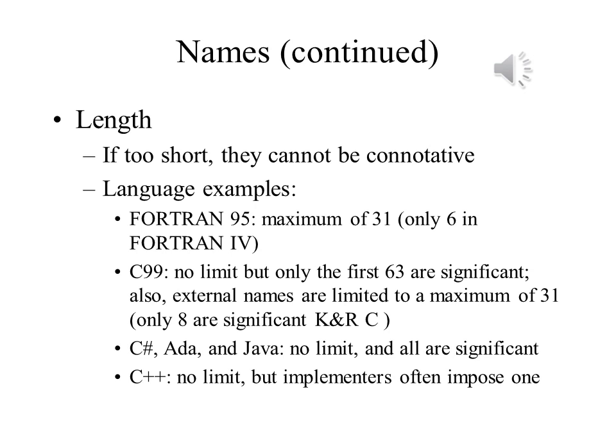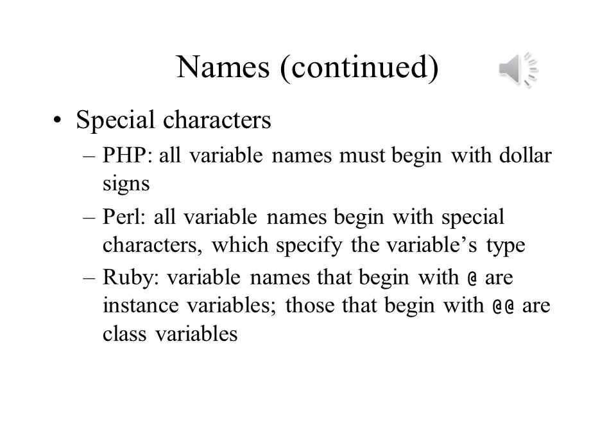C++ has no limit, but the standard allows implementers to impose one. C#, Ada, and Java have no restrictions — there is no limit in how long an identifier can be, and all characters in an identifier are significant. Some languages use special characters, usually non-alphanumeric characters, in identifiers, and they can be used for a variety of reasons. BASIC uses a percent sign at the end of an identifier to indicate that it is an integer variable, and a dollar sign to indicate a character string. Perl uses special characters to distinguish between different types of variables. Scalar single-valued variables begin with a dollar sign. Regular arrays, or indexed arrays, begin with an at sign, while associative arrays, or hashes, begin with a percent sign.